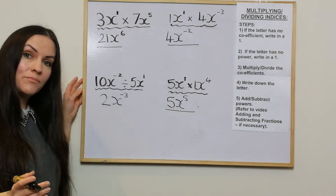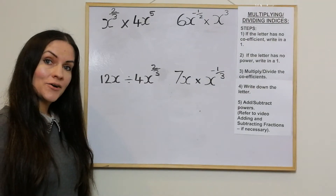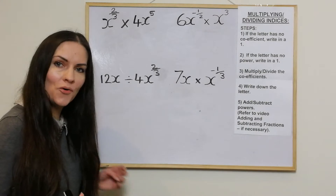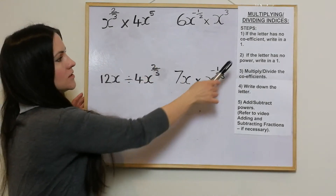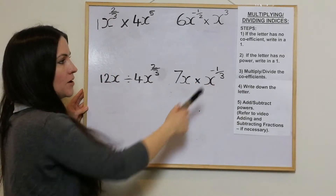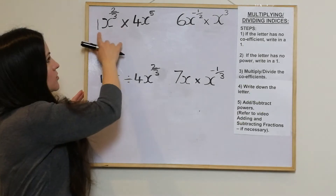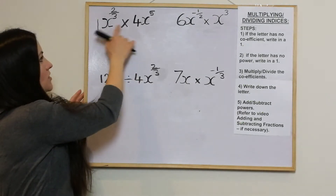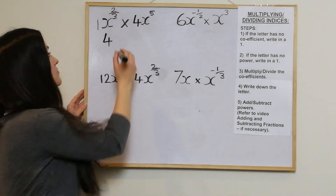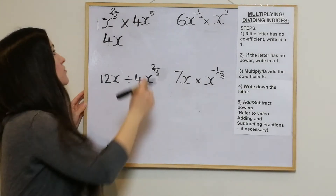Now I'm going to show you some examples with fractions — exactly the same rules but with a little bit added on the end. Starting with x to the power of 2 thirds times 4x to the power of 5. If the letter has no coefficient, write in a 1 — we do that. Both letters have powers, so no ones needed there. Because it's a multiplication, we multiply the coefficients: 1 times 4 is 4. Write down the letter x. Because it's multiplying, we're adding the powers — so we've got 2 thirds add 5.